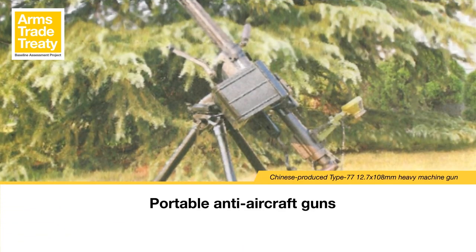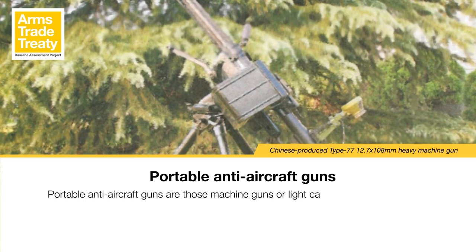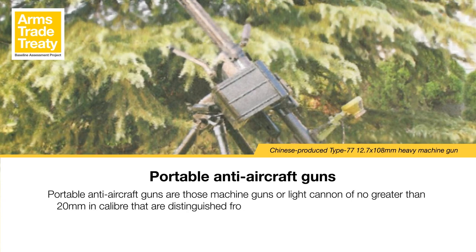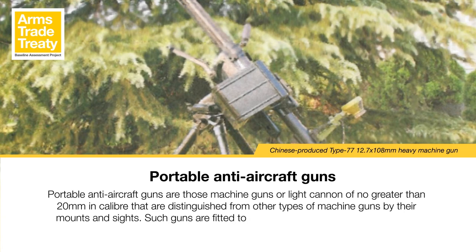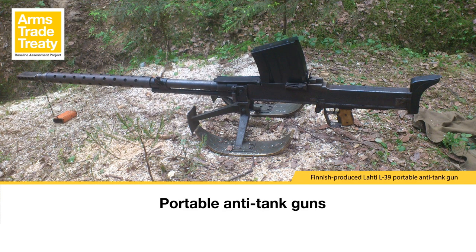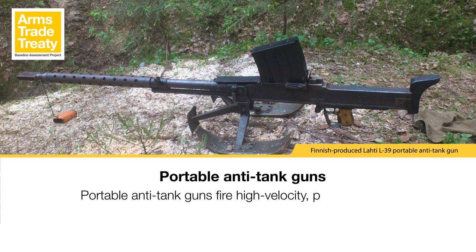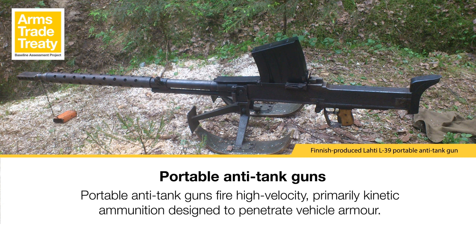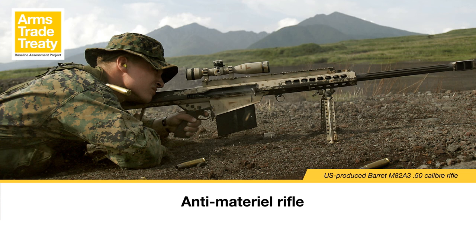Portable anti-aircraft guns are machine guns or light cannon of no greater than 20mm in calibre, distinguished from other machine guns by their mounts and sights. Such guns are fitted to mechanical mounts allowing them to rotate in a full 360-degree arc and elevate up to vertical or nearly vertical. The UN Register reporting form does not include a subcategory for portable anti-aircraft guns, but several UN member states have reported transfers of 14.5mm anti-aircraft guns in the subcategory 'Other Light Weapons'. Portable anti-tank guns fire high-velocity, primarily kinetic ammunition designed to penetrate vehicle armour. As the concept is dated — from the Second World War era — some UN member states have used this subcategory to provide information on international transfers of anti-materiel rifles (AMRs).